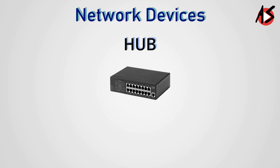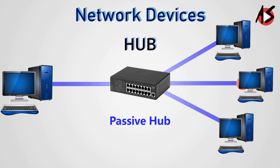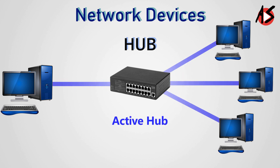Hub. Hub is a centralized device that connects multiple devices in a single LAN network. When a hub receives data from a connected device on any of its ports, it forwards those signals to all other connected devices from the remaining ports. Hubs are mainly of two types. First is the passive hub, which forwards data signals in the same format in which it receives them without any change. On the other hand, the active hub amplifies the data signals before forwarding them. Due to this added feature, the active hub is also known as a multiport repeater.